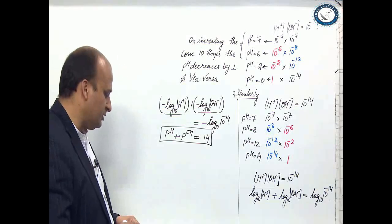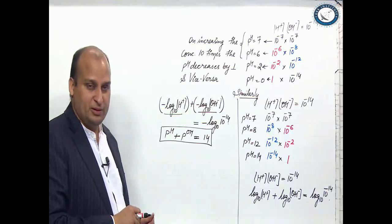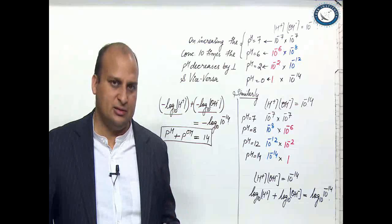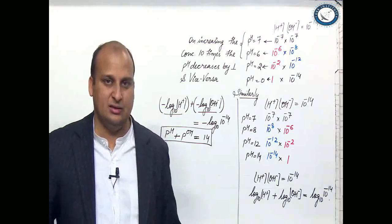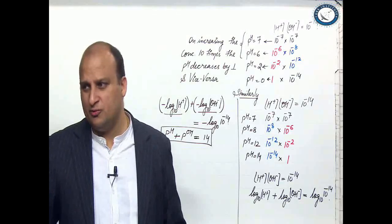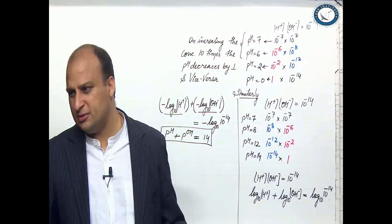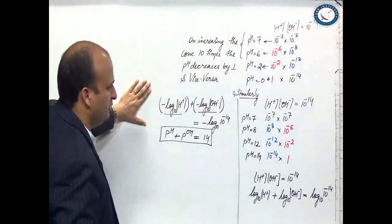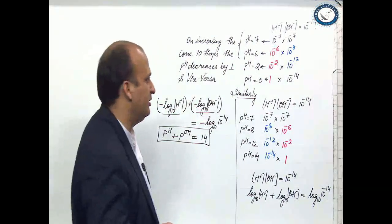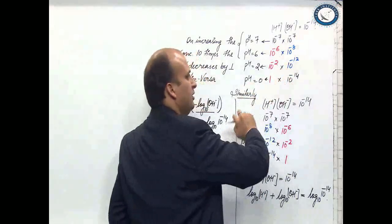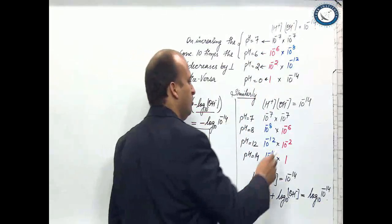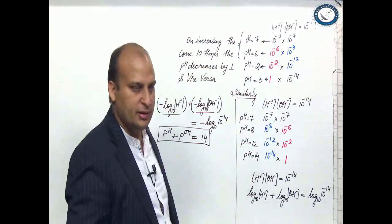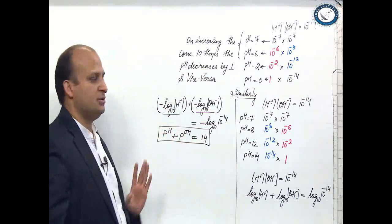So now you understand how the pH scale is formed: why the scale varies from 0 to 14, why 7 is neutral, why when we move from 7 to 0 the acidic strength increases, why when we move from 7 to 14 the basic strength increases, and why pH plus pOH is equal to 14. Now we have to solve certain questions based on this. As H plus concentration increases, pH moves from 7 towards 0. As OH minus concentration increases, pH moves from 7 towards 14. Thanks, guys.